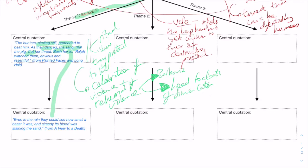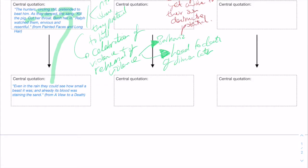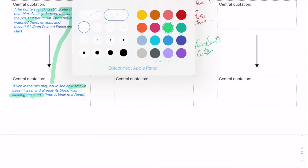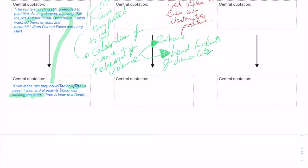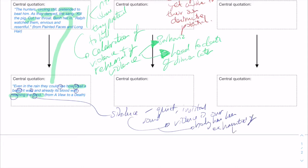Golding gives us this image of Simon afterwards. 'Even in the rain they could see how small a beast it was, and already its blood was staining the sand.' On top of that, we also have these sibilant S's: 'Even in the rain they could see how small a beast it was, and already its blood was staining the sand.' So this sibilance is a quiet, insistent sound. The violence is over. It's as though the body of Simon has been exhausted of life, but perhaps also gets across the shock of the consequences of this violence.